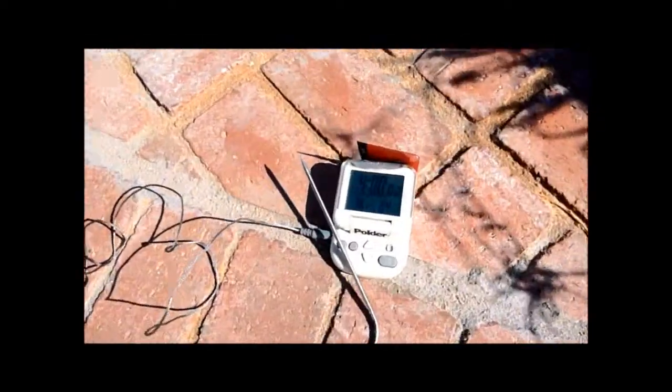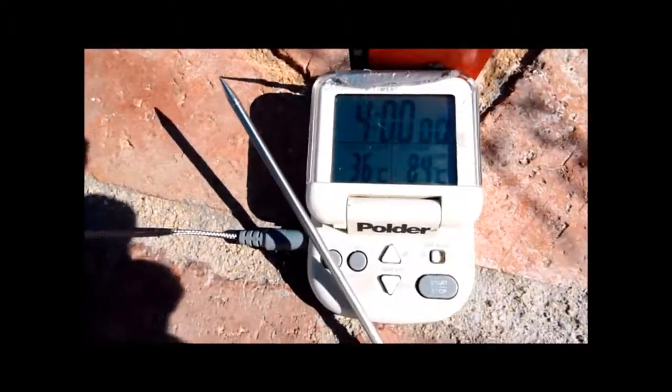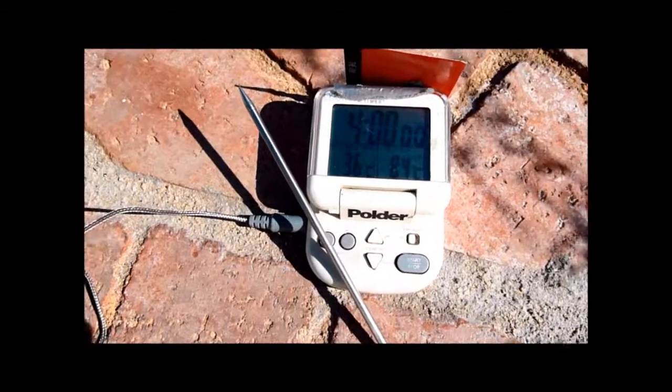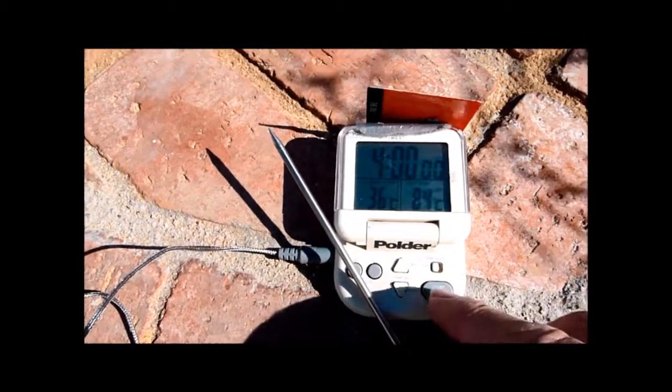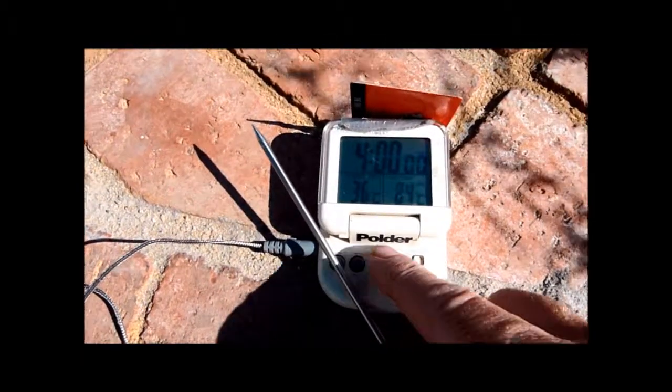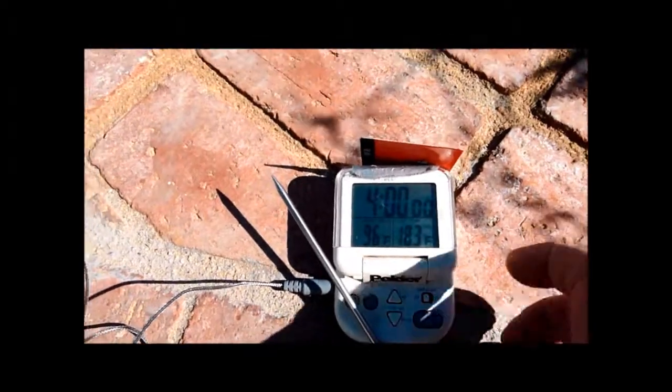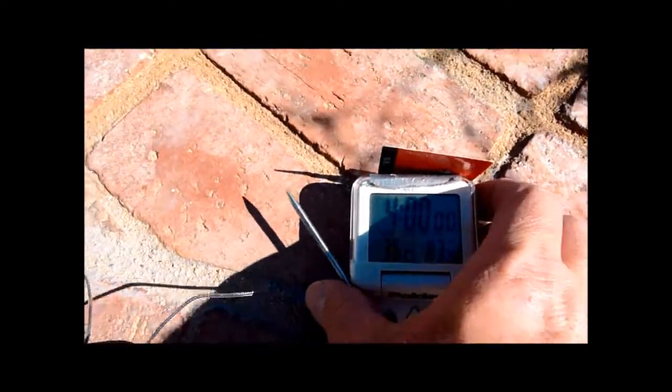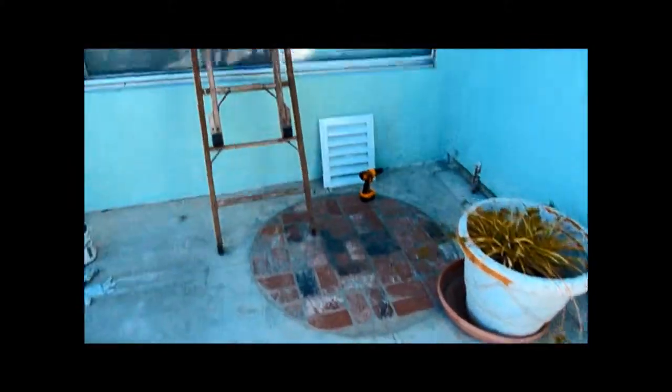My outside ambient temperature right now is what? Let's see here. It's not going to give me a reading, is it? Yeah, it's 96 degrees right now. So it's 96 degrees.